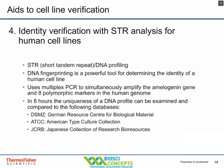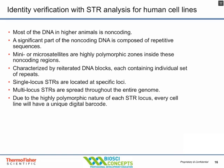Short tandem repeat analysis for DNA profiling may be another important tool, mostly for human cell lines. There are a number of databases — the American Type Culture Collection, the Japanese Collection, and the German Resource Center for Biological Materials — where you can gain information about your cell type. Most DNA in higher eukaryotes is non-coding, and a significant portion of non-coding sequence is repetitive, including mini and microsatellites — highly polymorphic zones. We can learn a lot using single-locus or multi-locus tandem repeats.